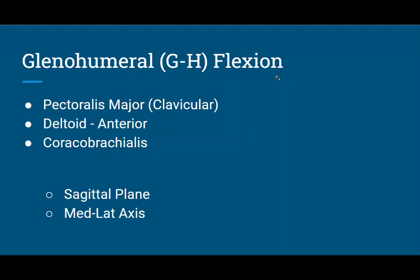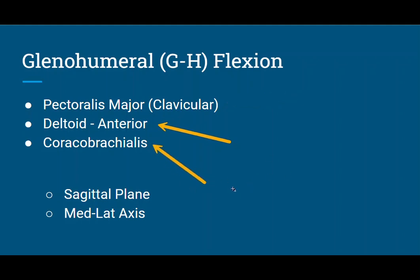To summarize, glenohumeral or GH flexion occurs from the pectoralis major clavicular head, the anterior deltoid muscle, and the coracobrachialis. It is a sagittal plane motion about the medial-lateral axis.